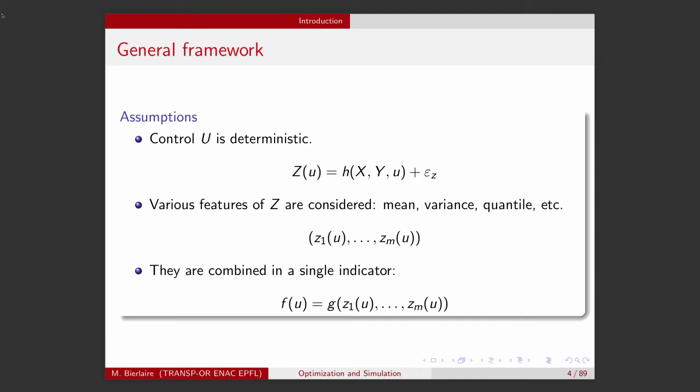A simulator may produce various indicators, but these indicators are distributed. From the distribution, we may be interested in several quantities, like the mean, the variance, the quantile, the mode, and so on. The framework — the simulator — generates a lot of indicators. We will assume that all the indicators generated by the simulator can be combined into a single indicator, which we denote F of U. So for each value of U that we provide, the simulator will generate an indicator called F of U. The concept of optimization is to find the values of U such that F of U is either the largest or the smallest.